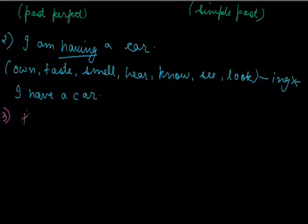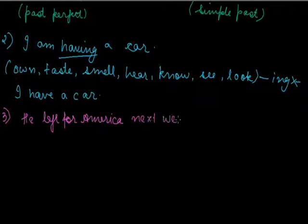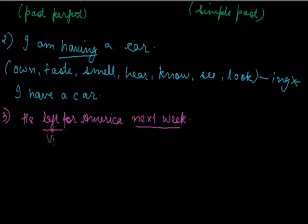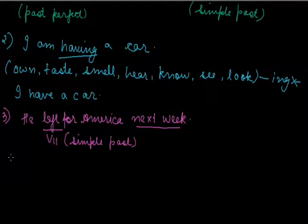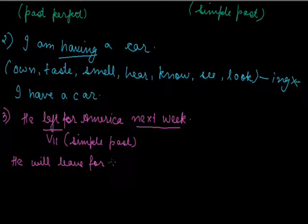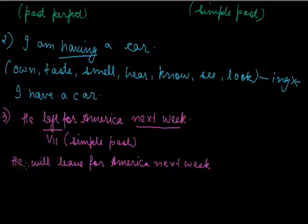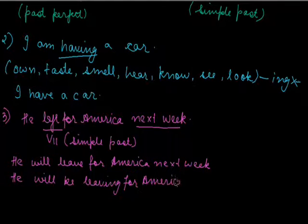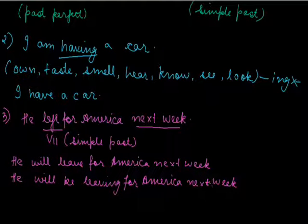Third question: He left for America next week. Next week itself denotes a future activity, so you cannot use V2 (simple past) to denote a future activity. The correct answer is: He will leave for America next week. This sentence can also be written as: He will be leaving for America next week. To denote a future activity you can never use simple past format.